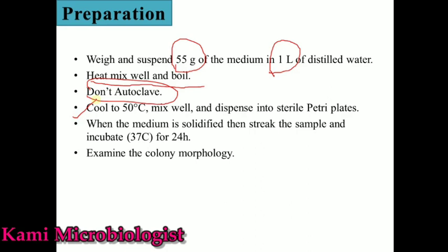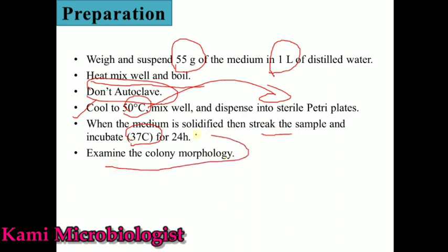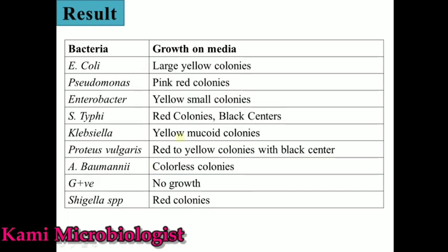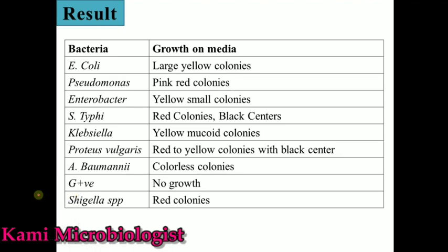After heat mixing and boiling, cool it down to 50 degrees Celsius, then pour it into sterilized Petri plates. After solidification of the media, we streak the sample and incubate for 24 hours. After 24 hours, we examine the colonies.